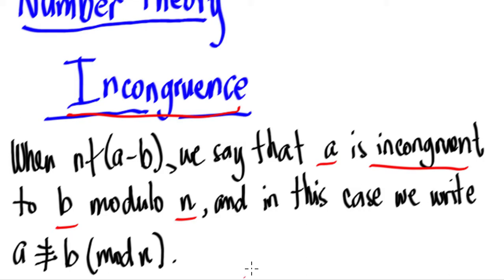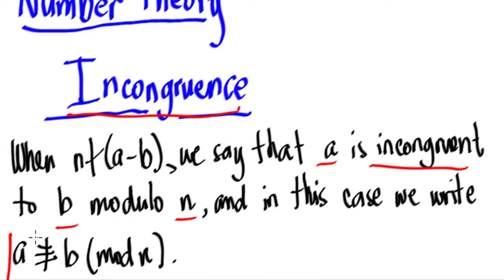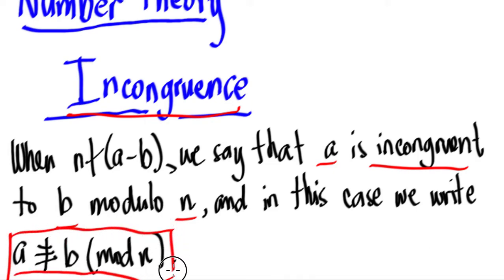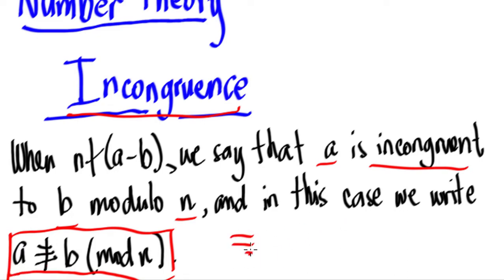So a is incongruent to b modulo n — we write it this way. We just take the congruence symbol and cross it, just like when we say that two numbers are not equal.